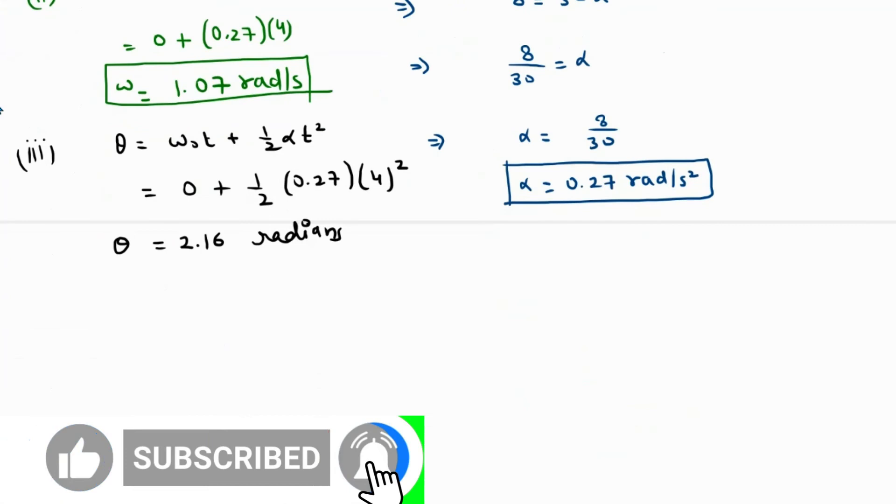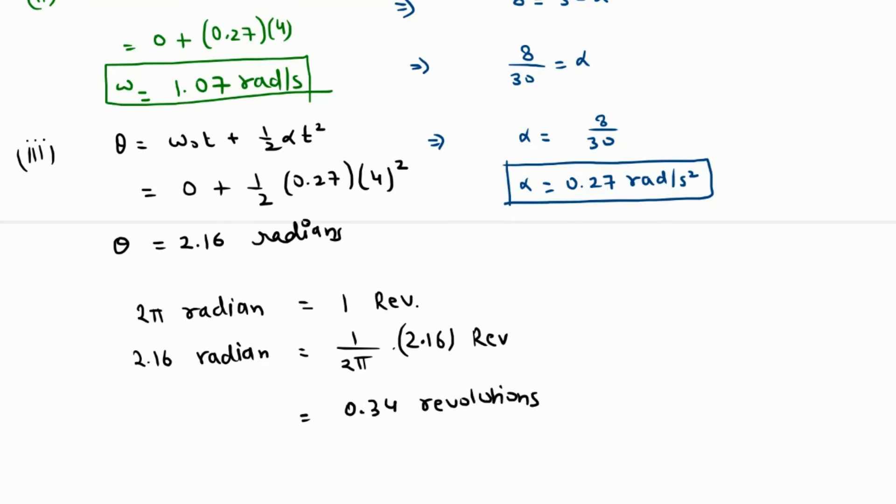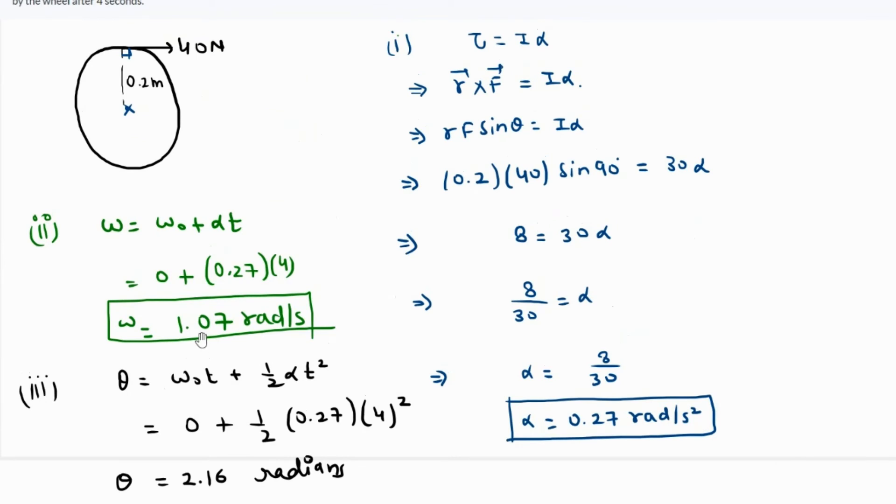That's not a problem - we can convert to revolutions because we know the relationship between radians and revolutions. We know that 2π radians means one complete circle, which corresponds to one revolution. So 2.16 radians will correspond to 1 over 2π times 2.16 revolutions. I've used a simple unitary method here, and this value comes out as 0.34 revolutions. This is the answer to part 3.